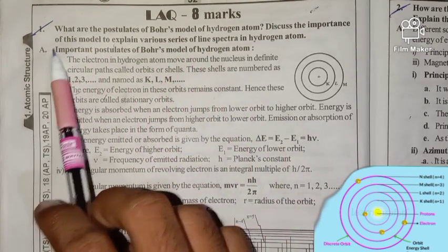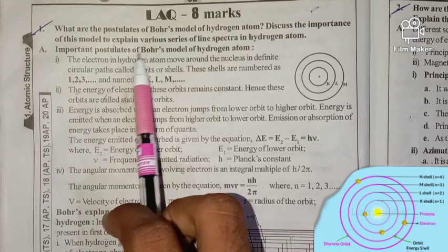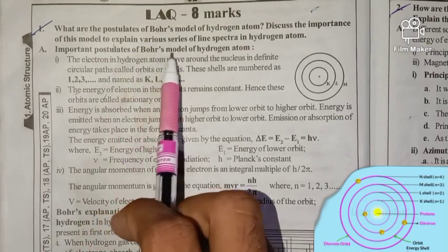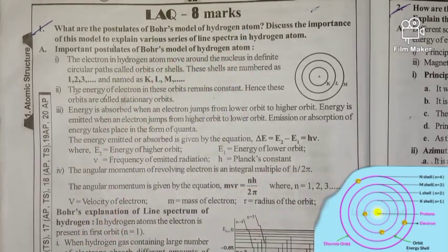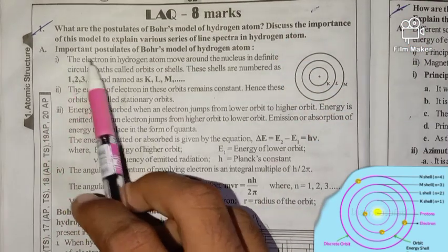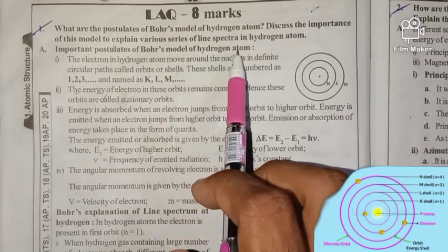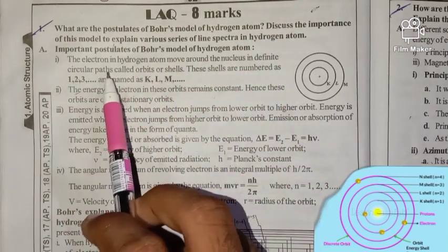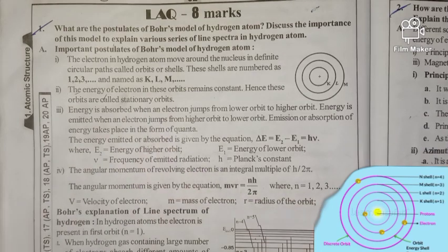First postulate of Bohr's model of the hydrogen atom: the electron in the hydrogen atom moves around the nucleus in a definite circular path called an orbit or shell.